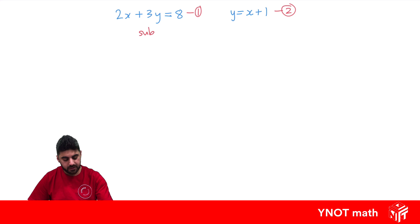So we want to sub equation 2 into equation 1. When we do that we've got to be careful and we should add a bracket in. So we've got 2x plus 3 times y, but we know y equals x plus 1 from equation 2, and that equals 8.